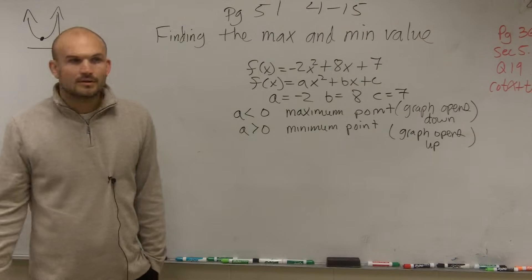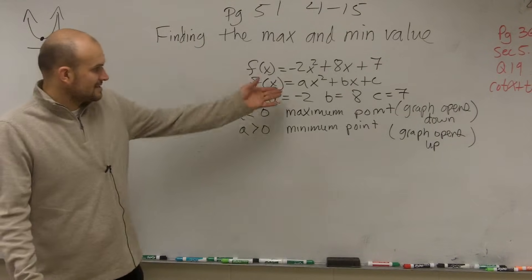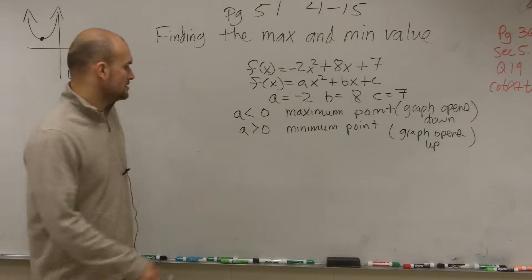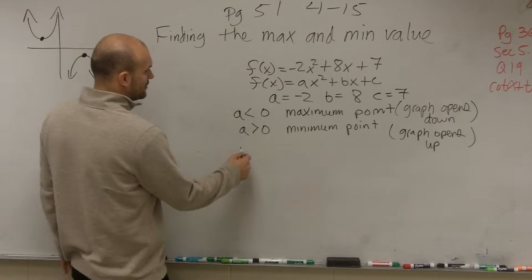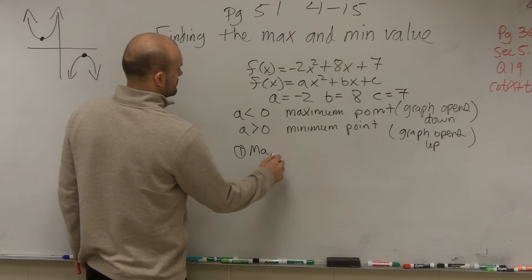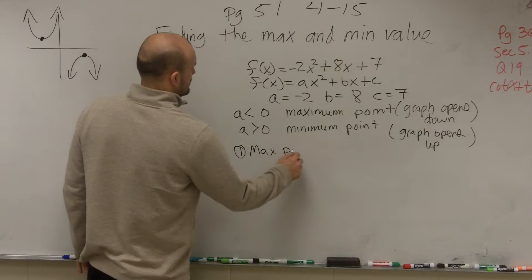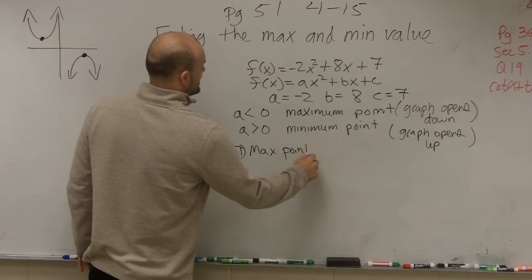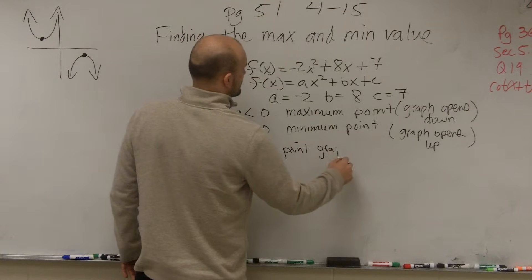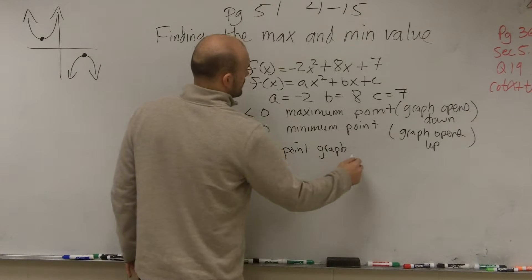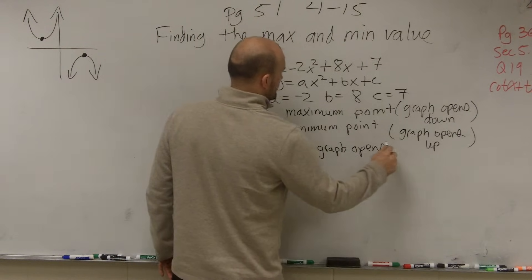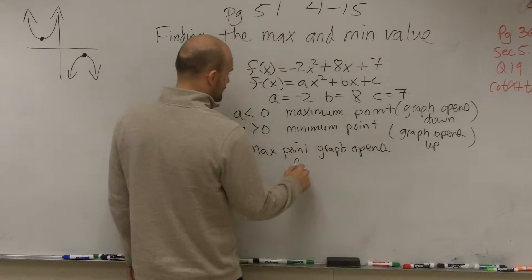Maximum point — a is less than 0 because it's negative 2. So for our example, we have a max point. That means the graph opens down.